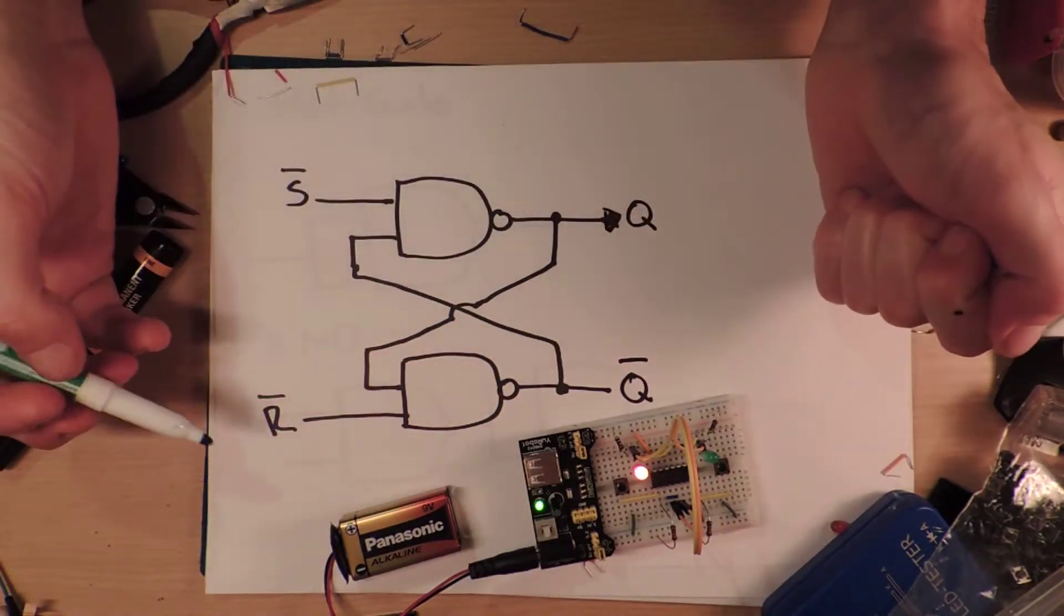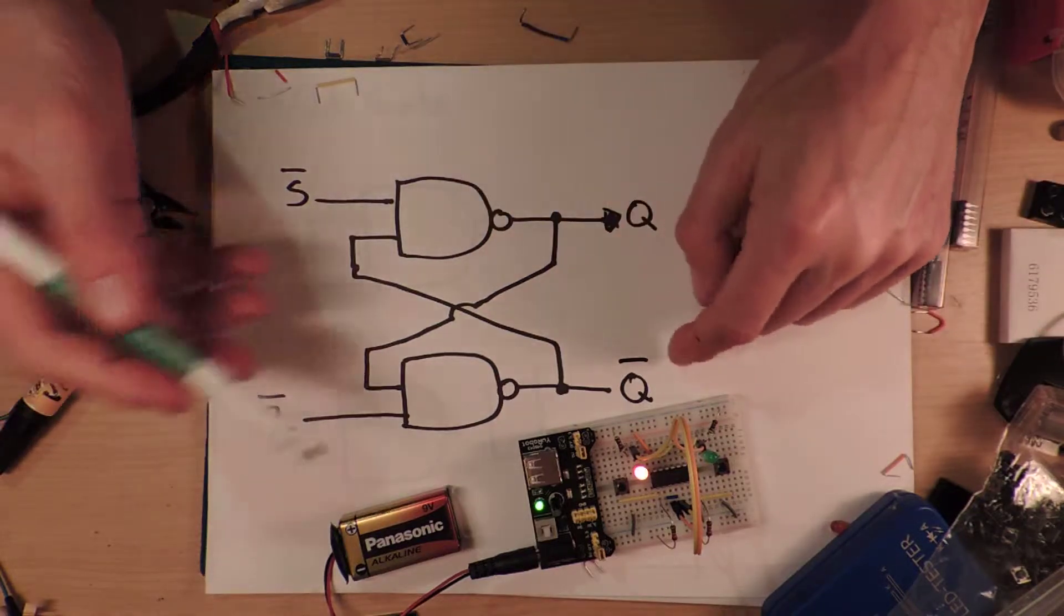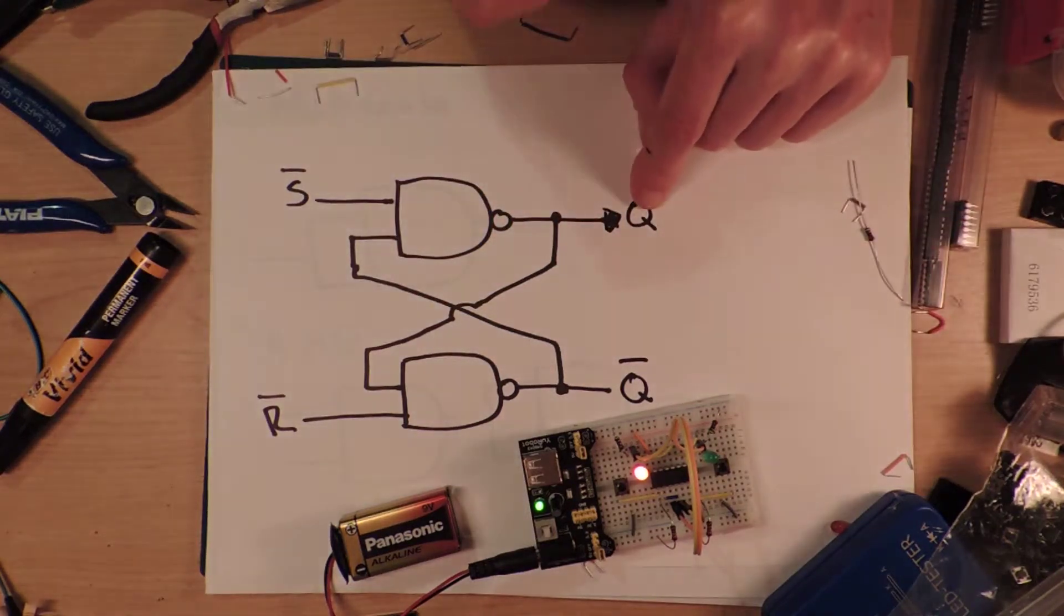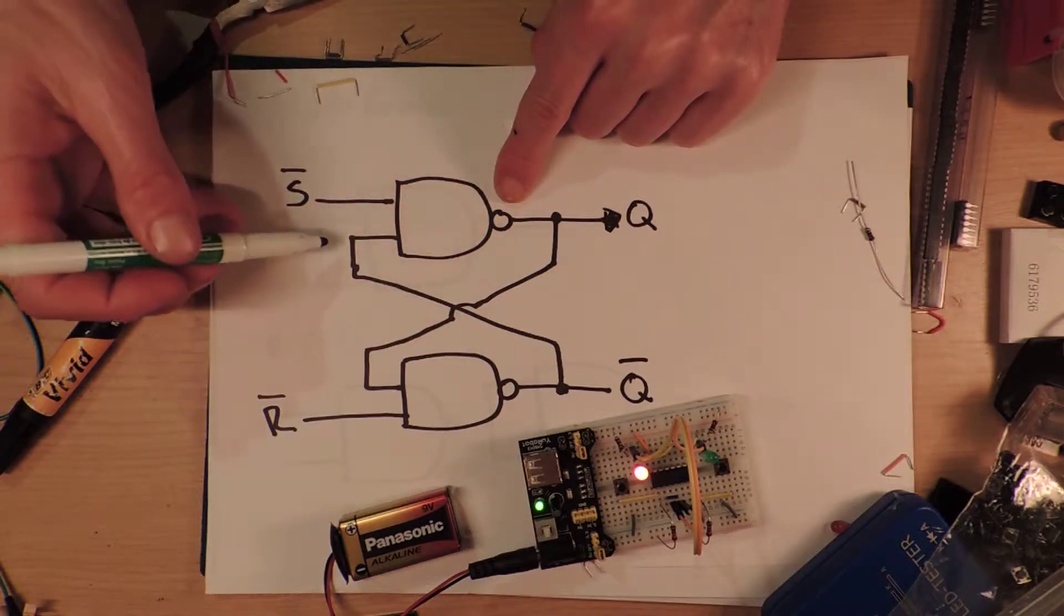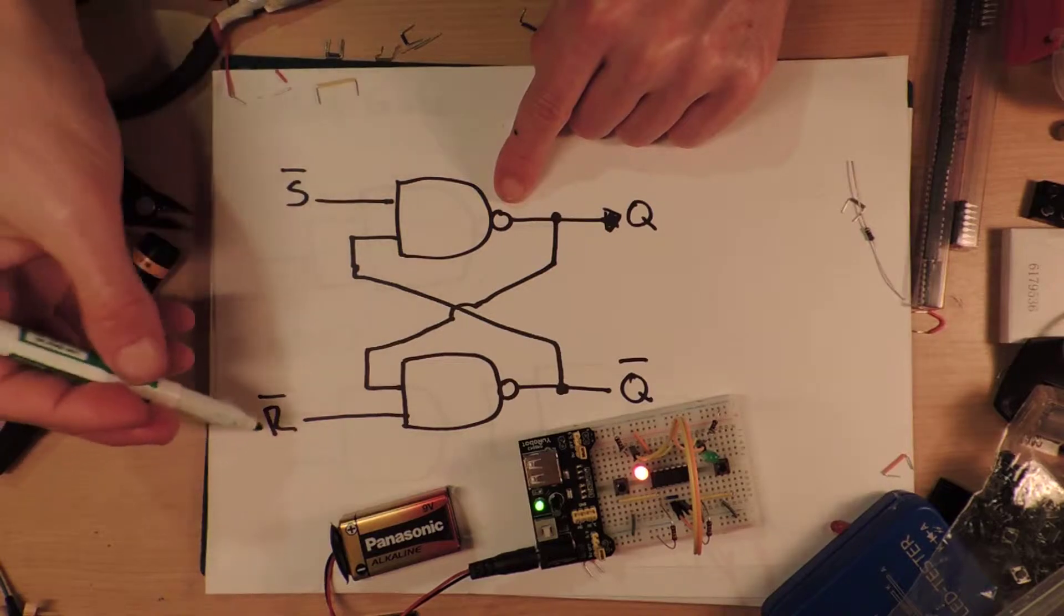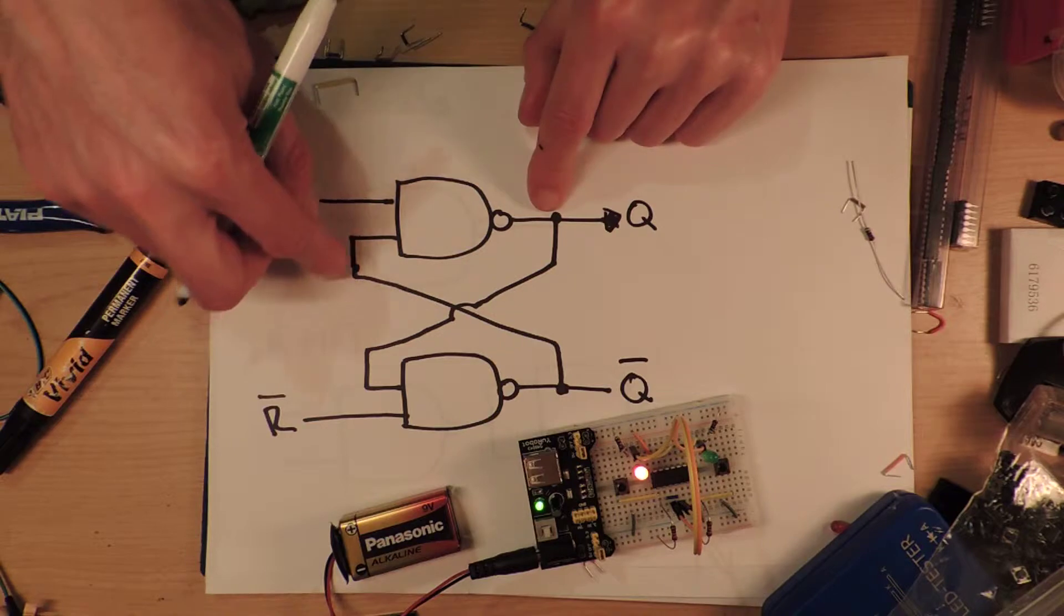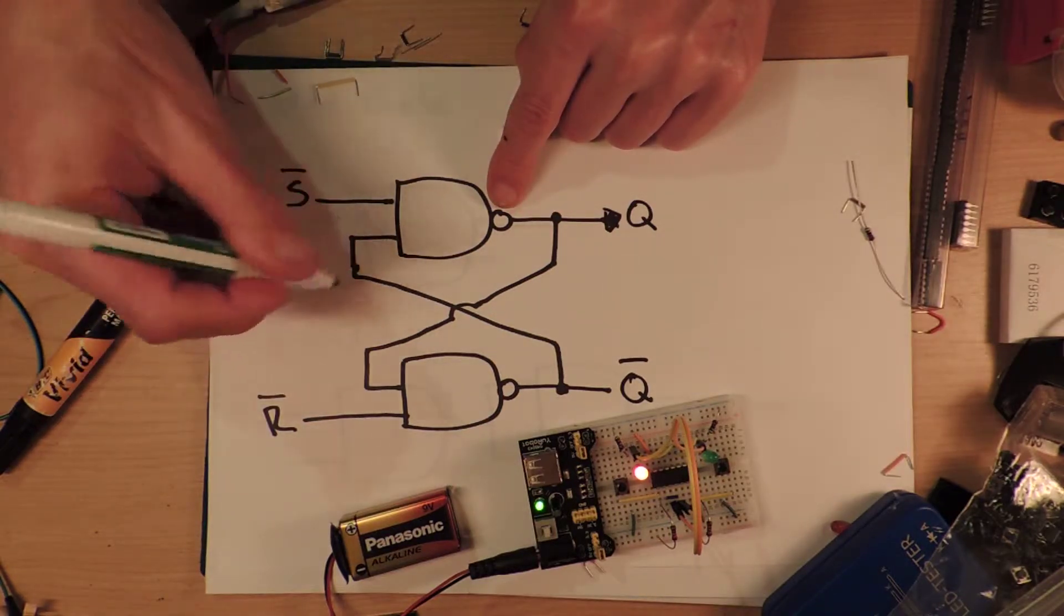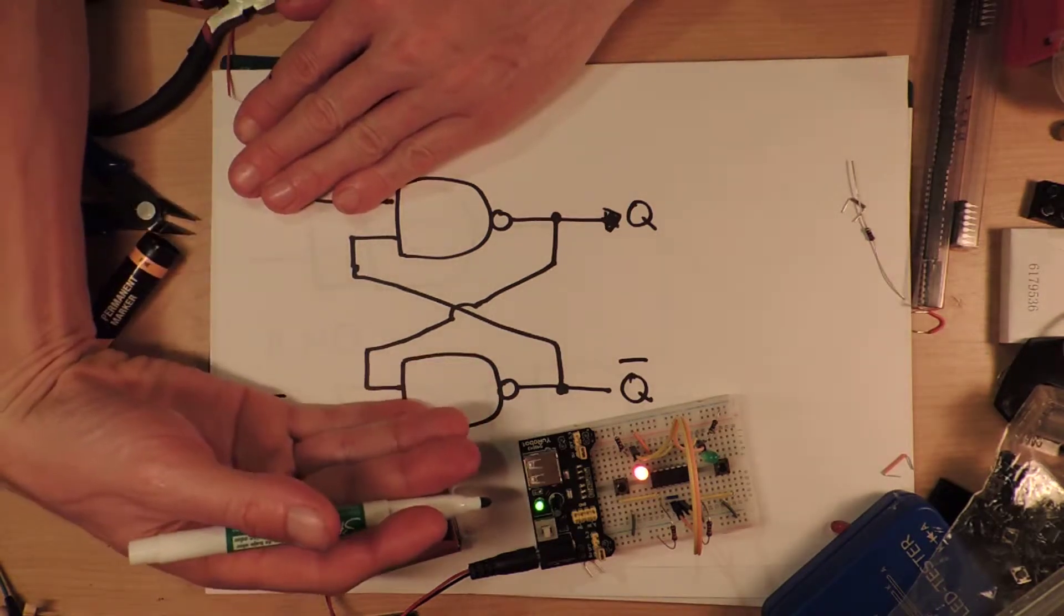Let's just say that both the inputs are currently pulled high. And that for the sake of argument, this one is on and that one is off. So if this is a high output, and both of these are pulled high, so the output of this is going to depend on what the value of the input is.